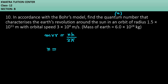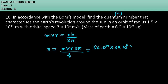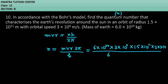If we write the n value, then n equals mvr multiplied by 2π over h. Mass is 6 × 10^24, v is 3 × 10^4, r is 1.5 × 10^11. And then you have 2 × 3 × 3.14 divided by h, Planck's constant, which is 6.6 × 10^−34.